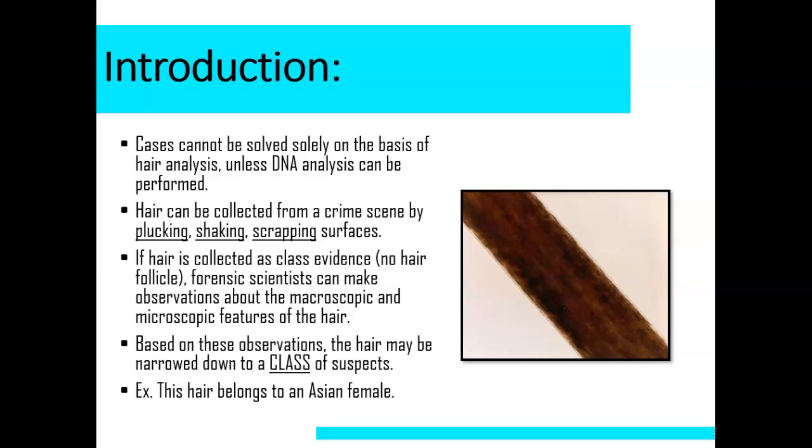If hair is collected as class evidence, no hair follicle, forensic scientists can make observations about the macroscopic and microscopic features of the hair. What's the difference? Remember, macro means big, micro means small. Based on these observations, the hair may be narrowed down to a class of suspects. For example, the hair belongs to an Asian female.